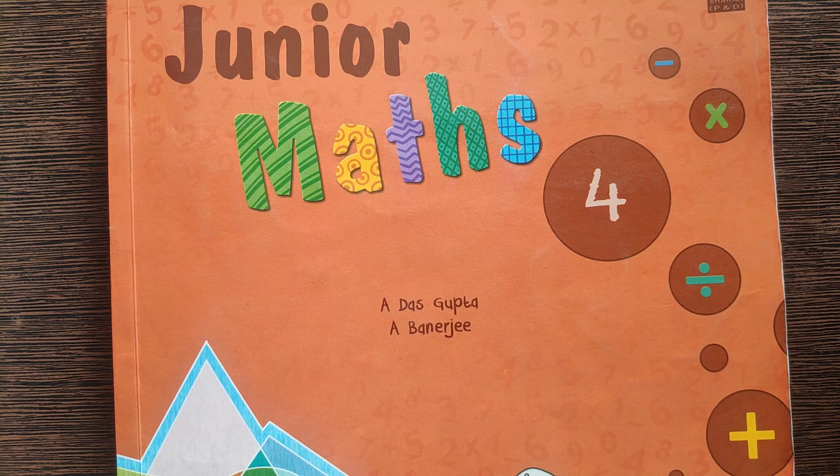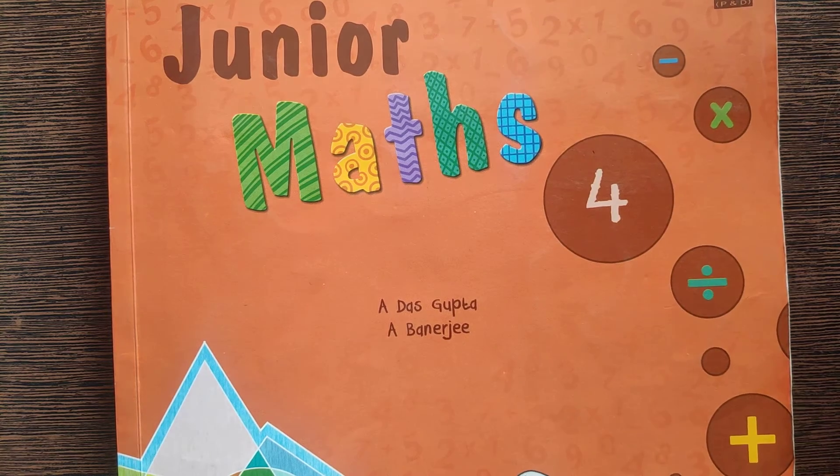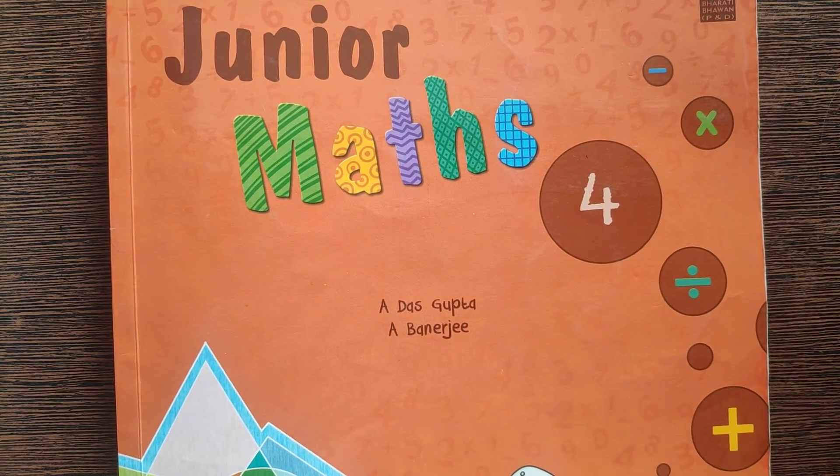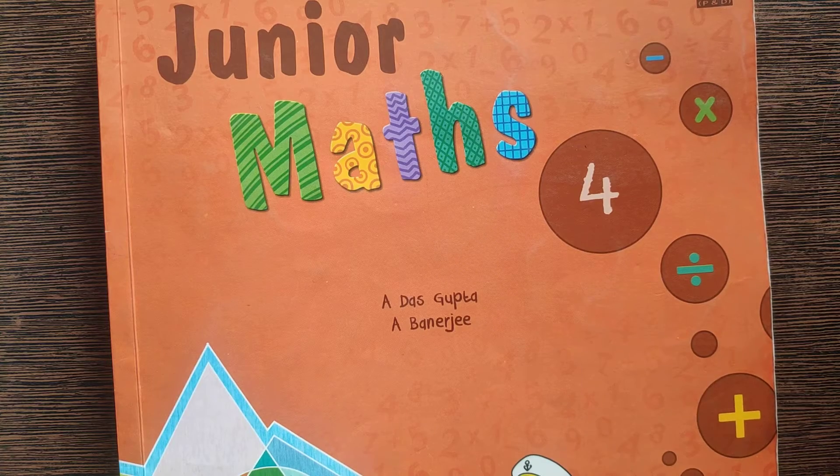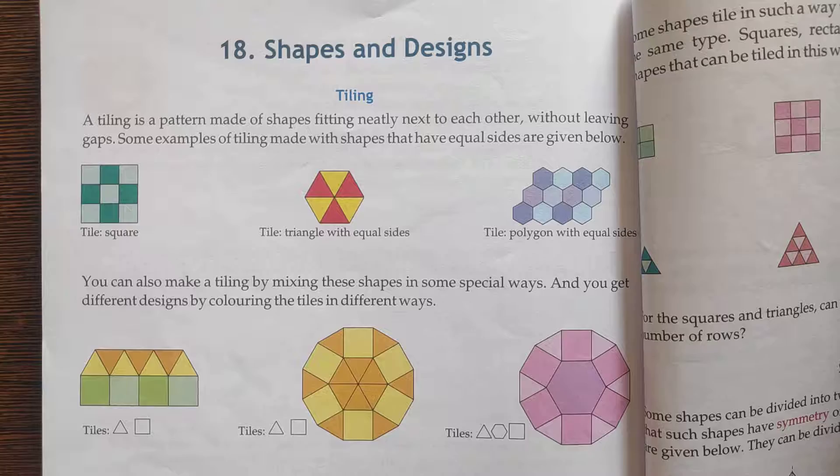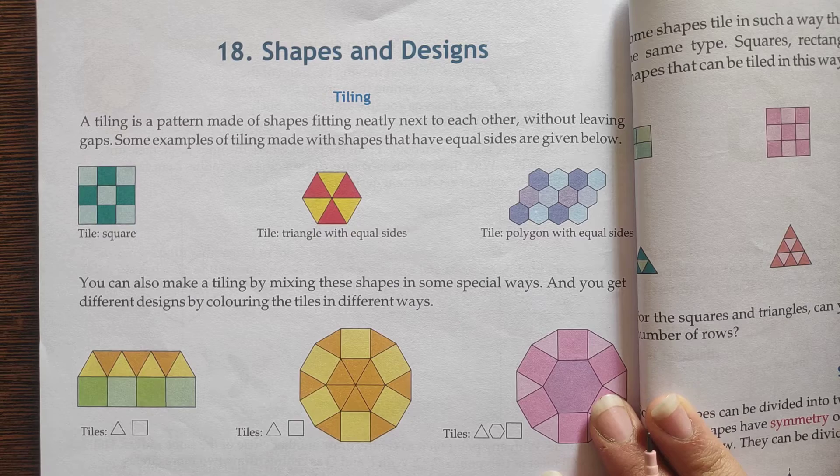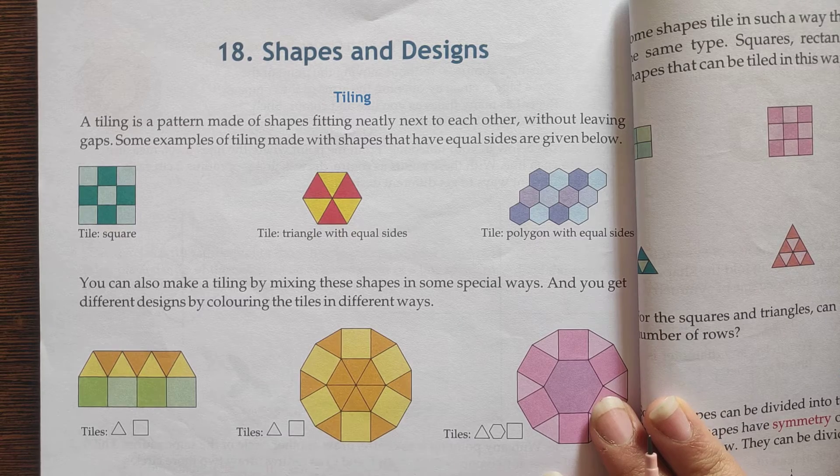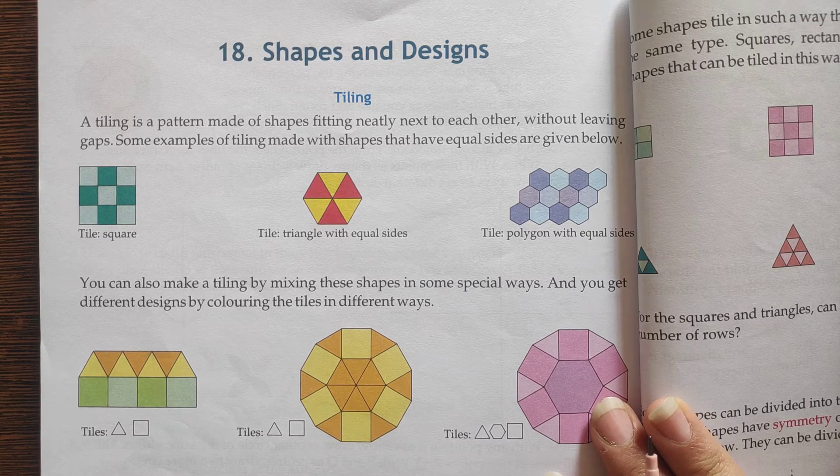Now, we will start the unit number 18, Shapes and Designs. Let's start from the book. Open the page number 148, unit number 18, Shapes and Designs.